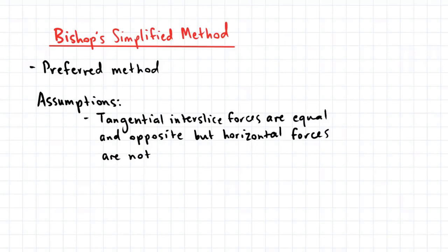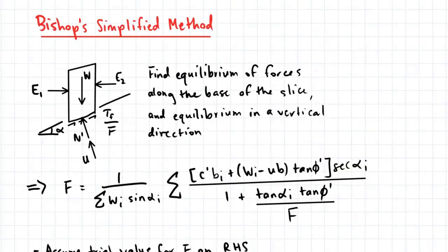The key assumption in Bishop's Simplified Method is that tangential inter-slice forces are equal and opposite, but horizontal inter-slice forces are not. So this is what it means in a picture.